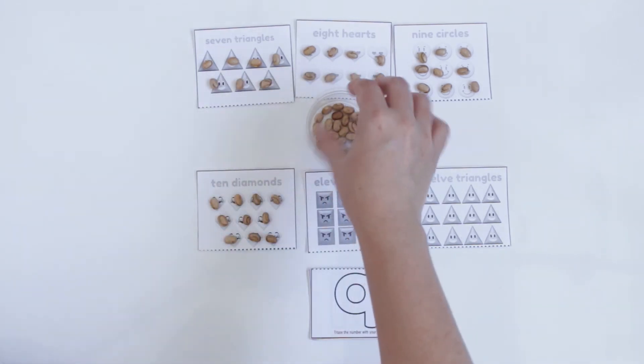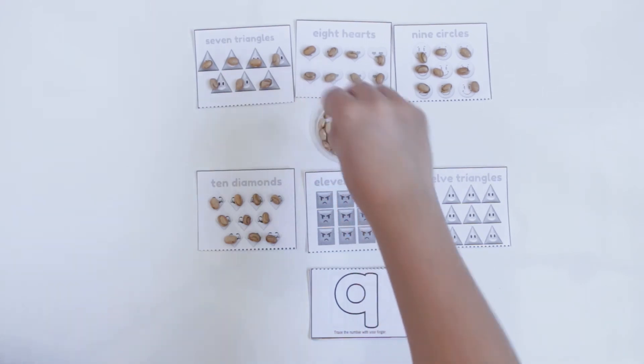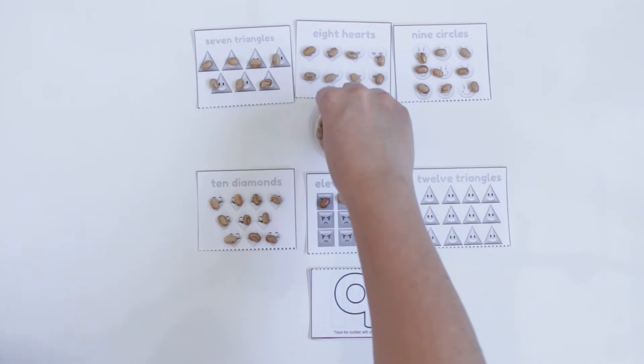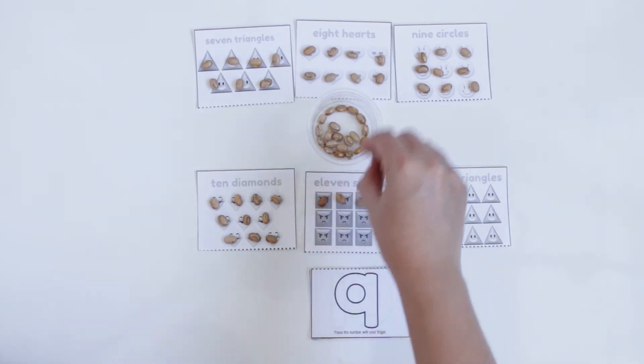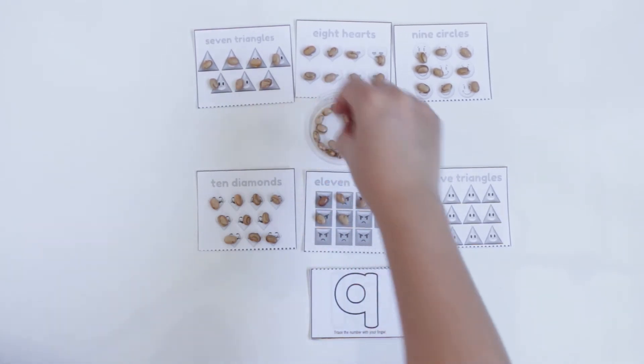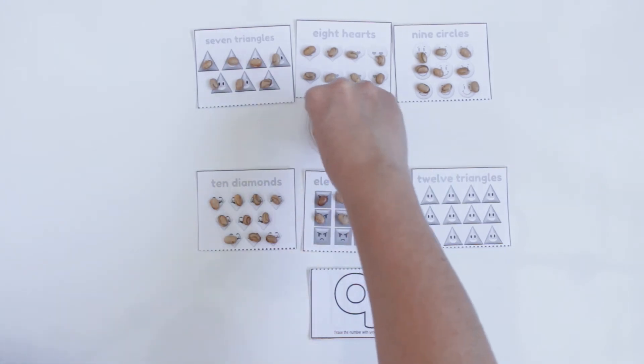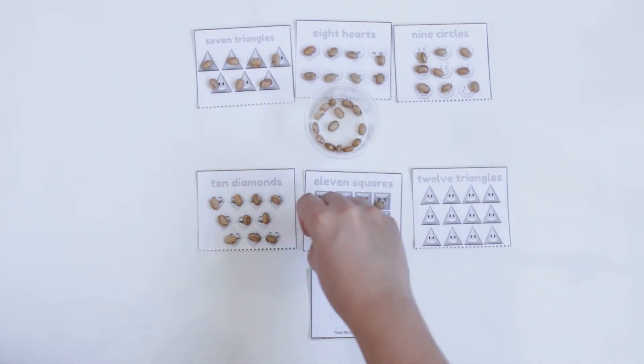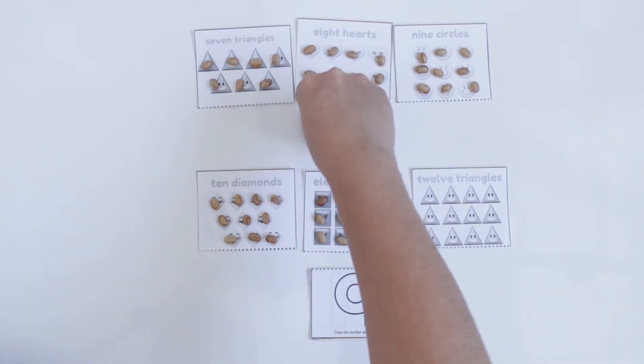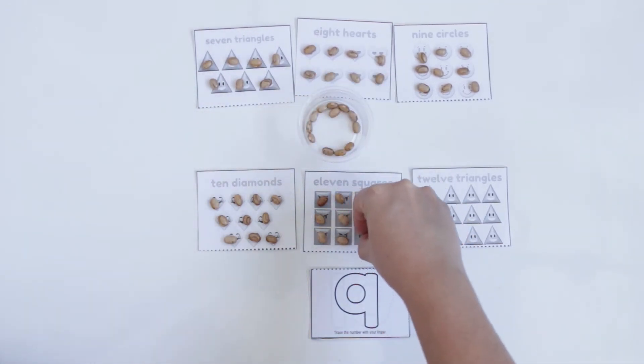Here I have squares: 1, 2, 3, 4, 5, 6, 7, 8, 9, 10, 11.